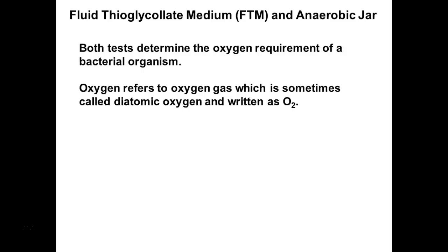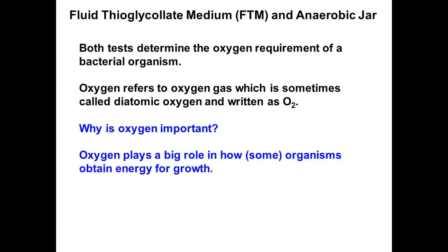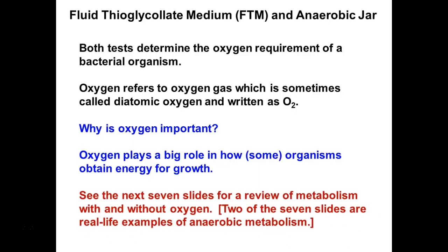When we say oxygen, we're referring to oxygen gas — usually diatomic oxygen, O2. Why is oxygen important? We need it to survive because we're aerobes. At the metabolic level, we use something called aerobic respiration. This is something covered in biology class. It plays a role in how some organisms obtain energy for growth — not all. Some organisms can grow anaerobically without oxygen. The next few slides are a review of metabolism with and without oxygen.